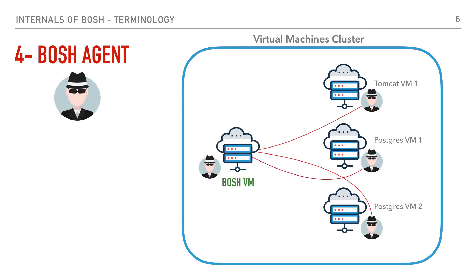This way the BOSH director knows where those VMs are and starts to communicate with them and send them tasks to do. For example, it can send them instructions to install the software of our choice, to start it, and to manage many other configurations on the VM and software. The agent binary itself is baked inside the stemcell used to create the VM, so there's usually no need for user intervention in its lifecycle.